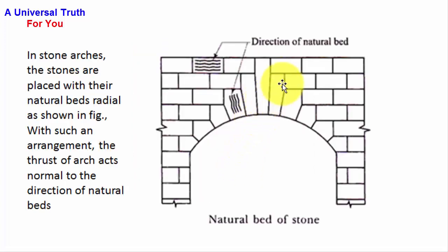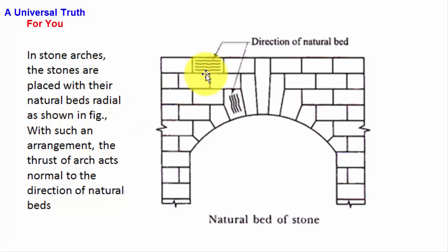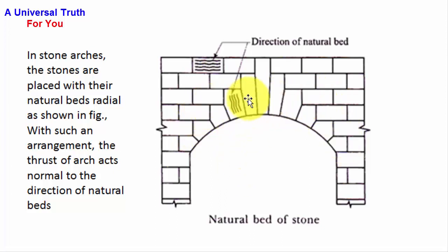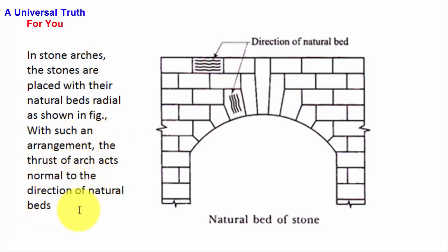Here is the example of a structure of a stone arch. In a stone arch, the stones are placed with their natural beds radial, as shown in the figure. You can see the direction of the natural bed — this is horizontal and this is inclined — forming the structure of the stone arch. With such an arrangement, the thrust of the arch acts normal to the direction of natural beds.